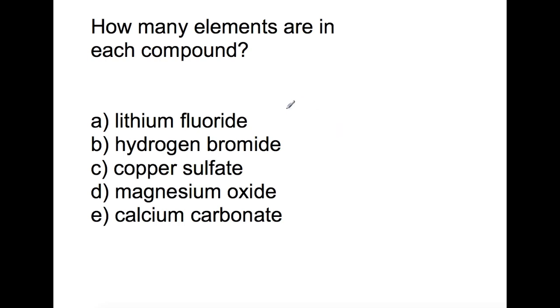So in the first compound we have IDE at the end. This means that we have two elements. The second compound, again we have IDE, so we have two elements. The third compound we have ATE, so we have three elements. The fourth one we have IDE, so two elements. And then the fifth one we have ATE, so three elements.